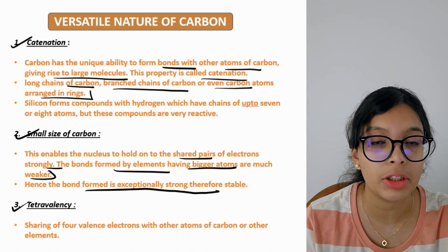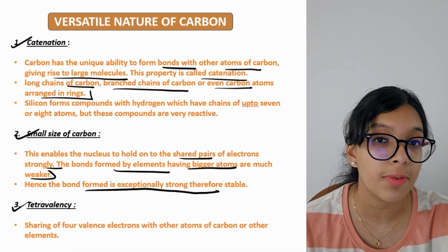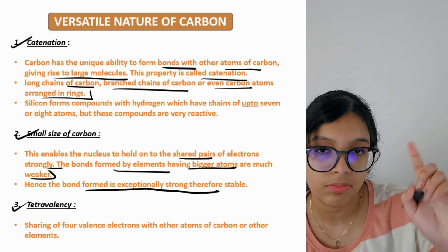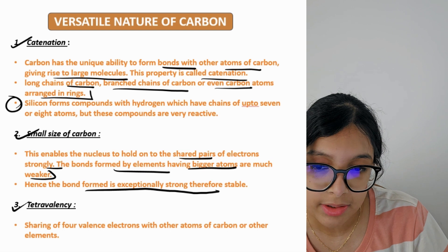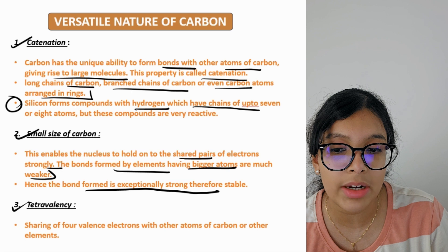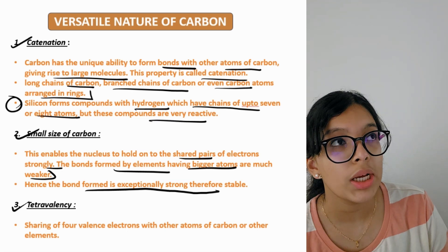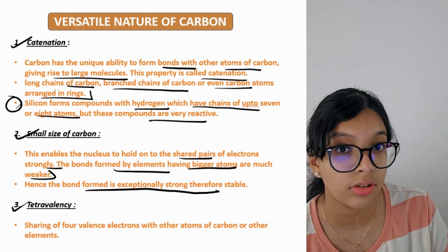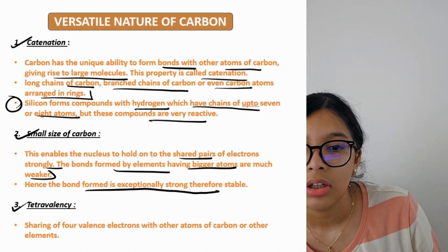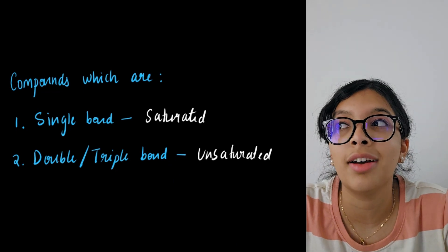The three properties making carbon versatile are: first, catenation — forming large chains and rings; second, small size — making bonds stronger and more stable; third, tetravalency — sharing four valence electrons. Note that silicon also forms compounds with hydrogen with chains up to seven or eight atoms, but these compounds are very reactive. Only carbon properly forms the stable long-chain compounds characteristic of organic chemistry.